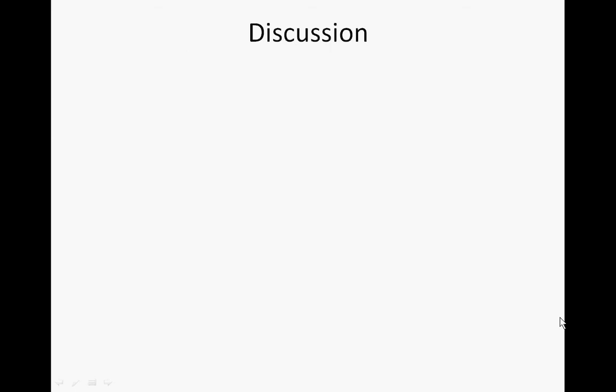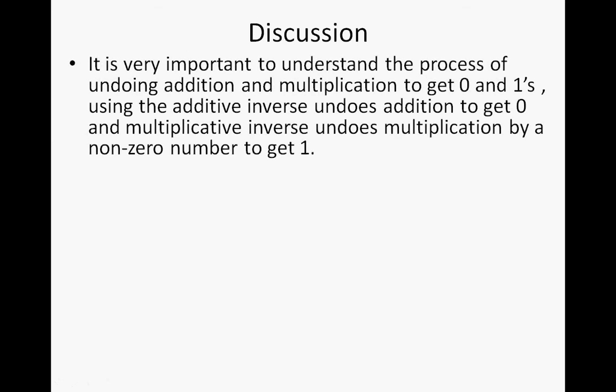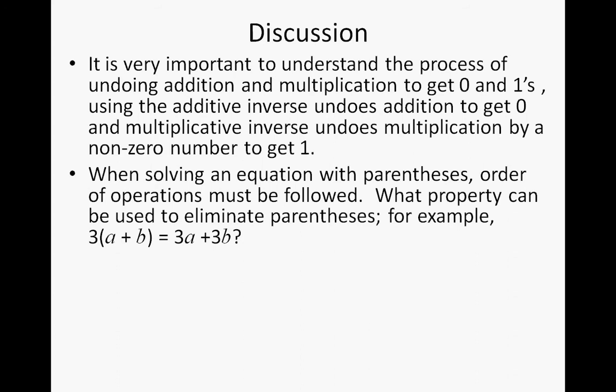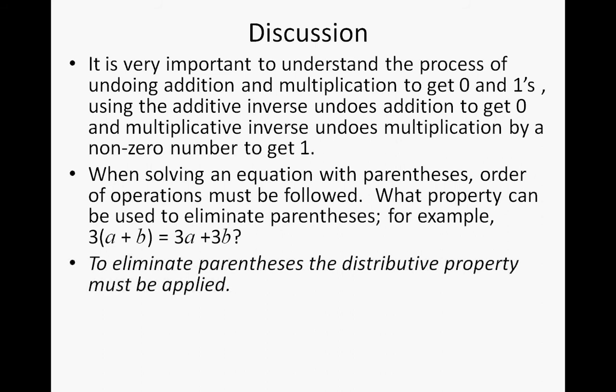Let's look at our discussion — you may want to write these notes in your math journal. It's very important to understand the process of undoing addition and multiplication to get zeros and ones. The additive inverse undoes addition to get zero, and the multiplicative inverse undoes multiplication by a non-zero number to get one. In solving an equation with parentheses, the order of operations must be followed. The distributive property can be used to eliminate the parentheses — for example, three times the quantity of a plus b equals 3a plus 3b.